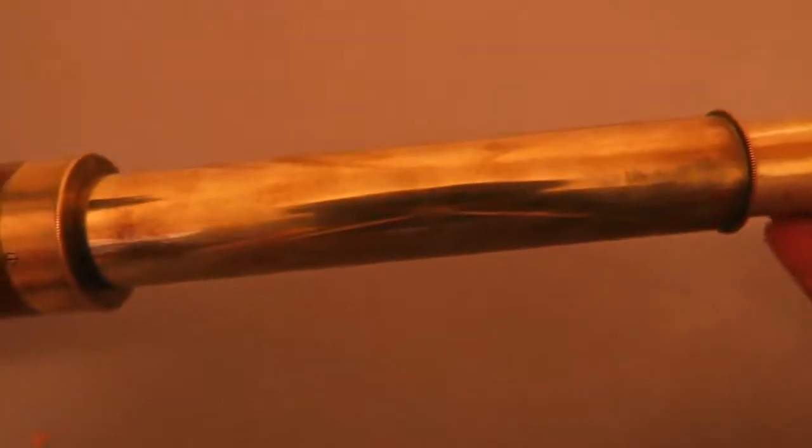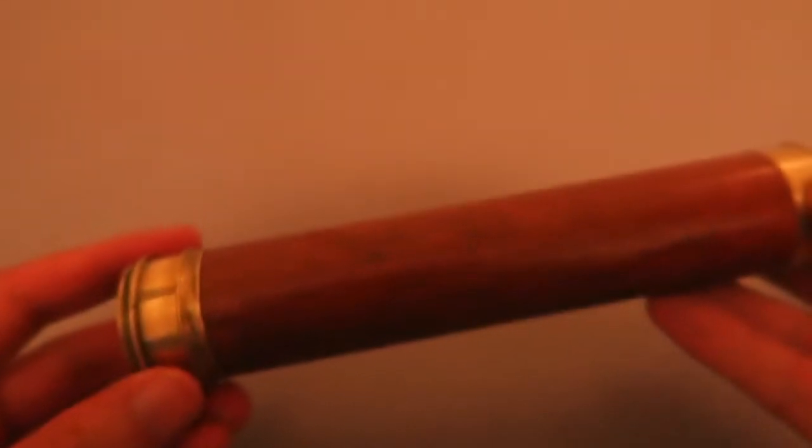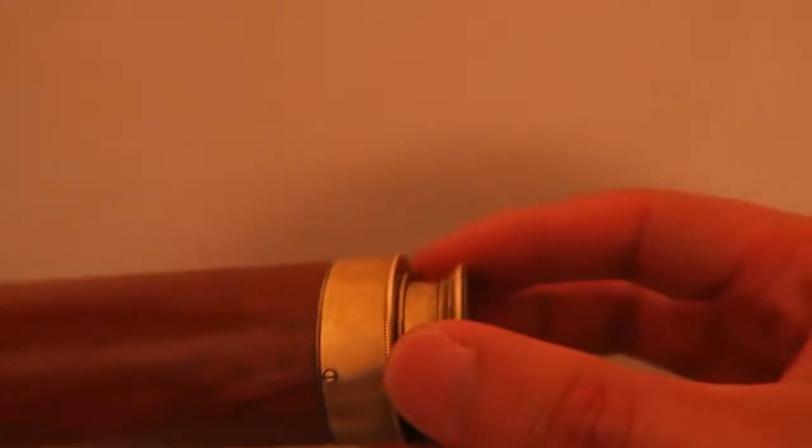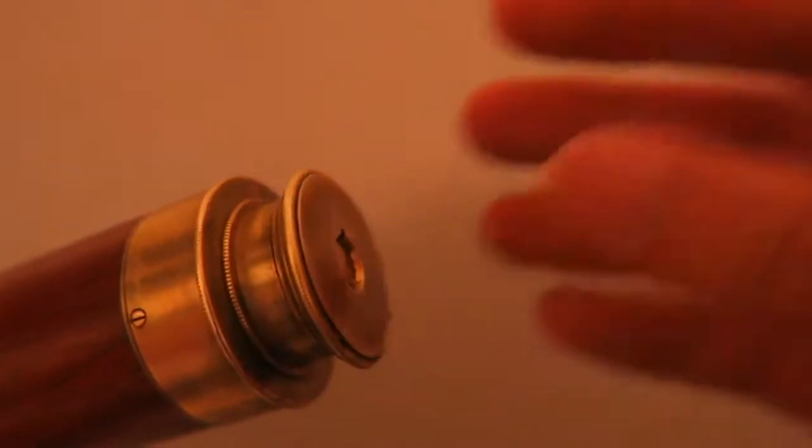I think sometime before the Victorian era, so that'll be sometime in the early 1830s, 1820s, 1810s, possibly older than that although I'm not entirely sure. Anyway, this telescope is a two-draw pocket telescope typical of the kind made during the very early 1800s, and I'm going to give you a little tour of it.